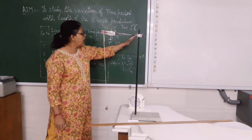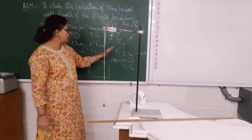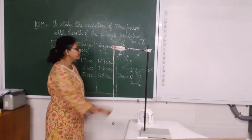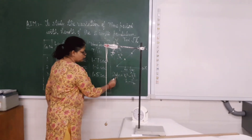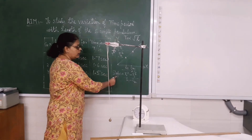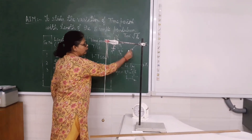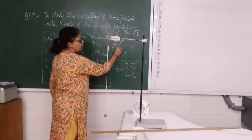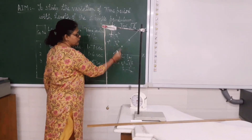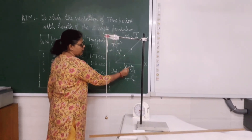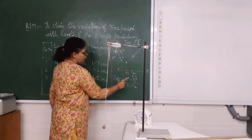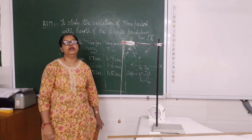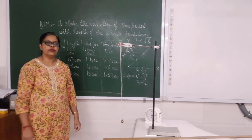And therefore, the graph between T² and L is a straight line. From this graph, I can also calculate the slope. I can take any two points on the graph — T1², T2², and the corresponding L1 and L2. From this particular graph, I can calculate the slope of the graph. Thank you, children.